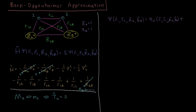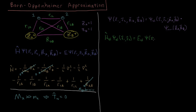The total wave function is multiplied by a nuclear wave function, which is just a function of the positions of nucleus A and nucleus B. So the total wave function is a product of an electronic wave function and a nuclear wave function — similar to the standard separation of variables arguments. This means we have an electronic Schrödinger equation: H_electronic acting on the electronic wave function (depending on R₁ and R₂) equals the electronic energy times ψ(R₁, R₂).